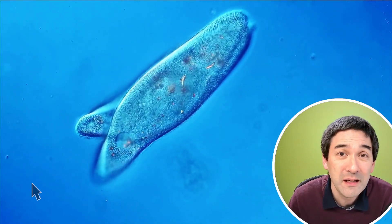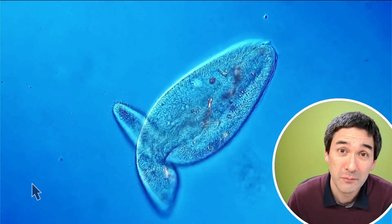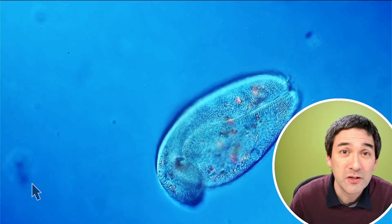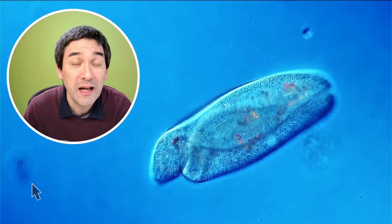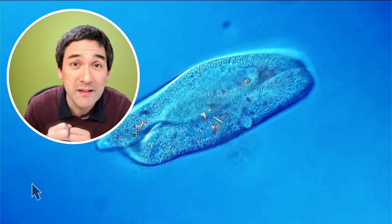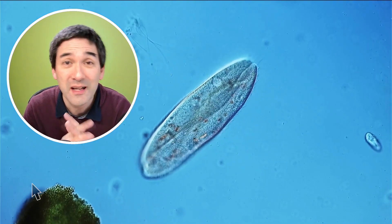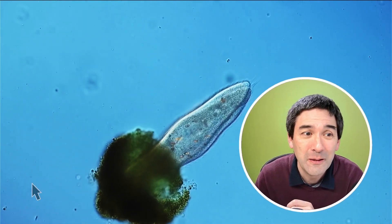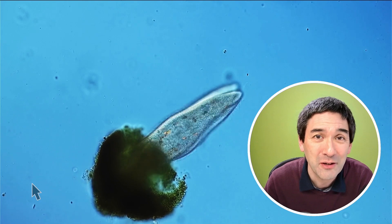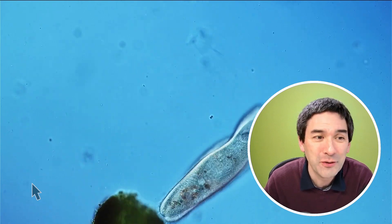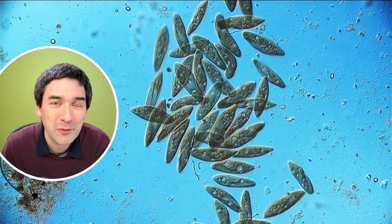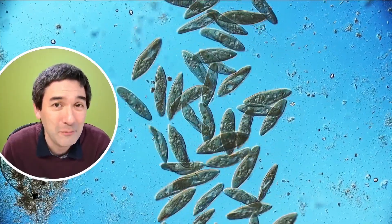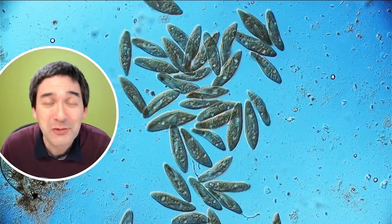What we have here is a separation between reproduction — which is done by cell division — and DNA exchange. This is different in us human beings, where reproduction and the mixing of DNA during fertilization are actually combined. But here with protozoans, these are different processes. Cell division by mitosis and conjugation are actually two separate things. Those little cells can be quite fascinating to observe as well. I wish you all the best — happy microbe hunting as always, and see you around next time.